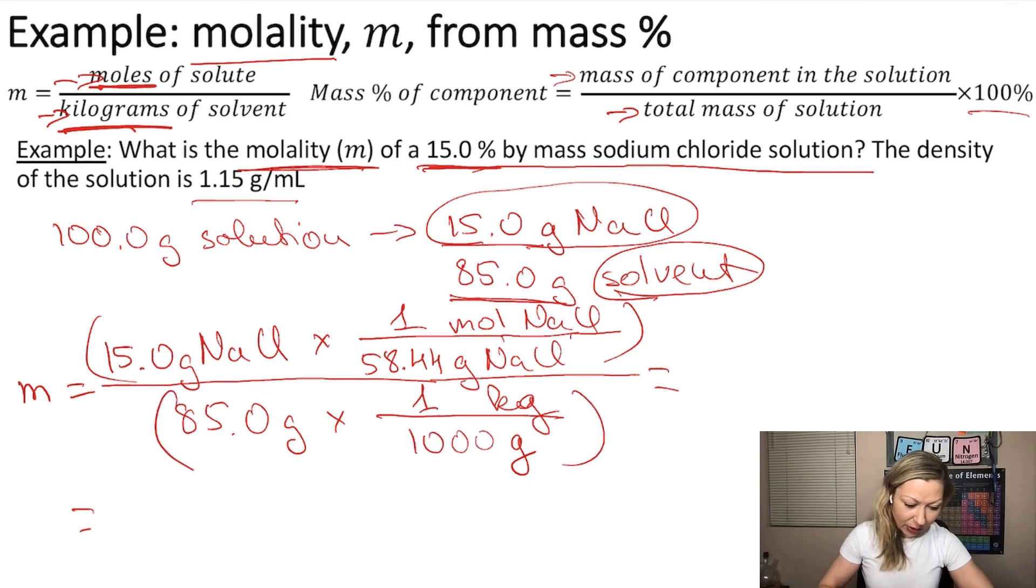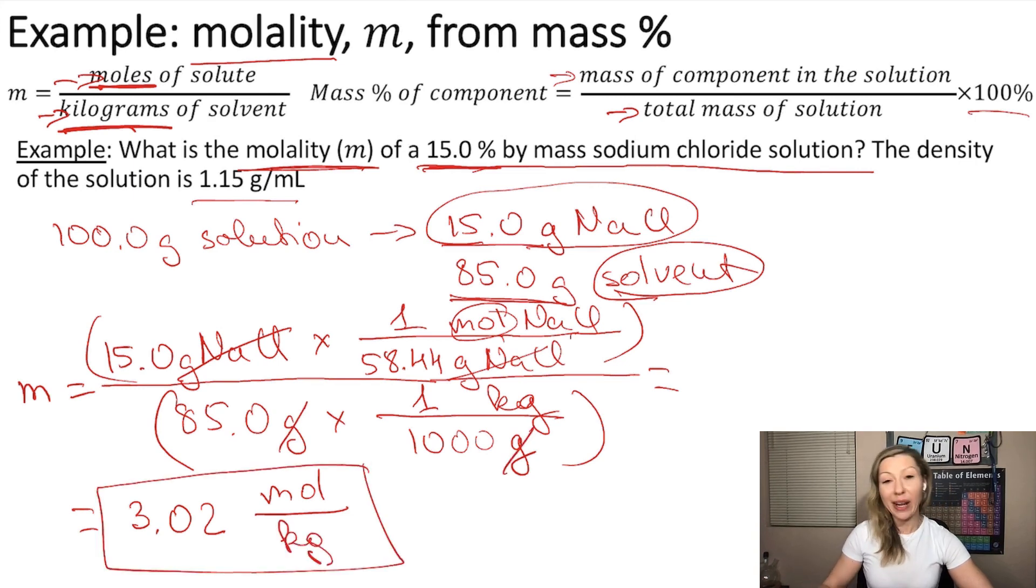Okay, if you do this calculation, you are going to get 3.02, and the final units are grams cancelled, so moles are going to be on the top, and grams cancelled again, kilogram on the bottom. Okay, I hope this makes sense. See you in the next video!